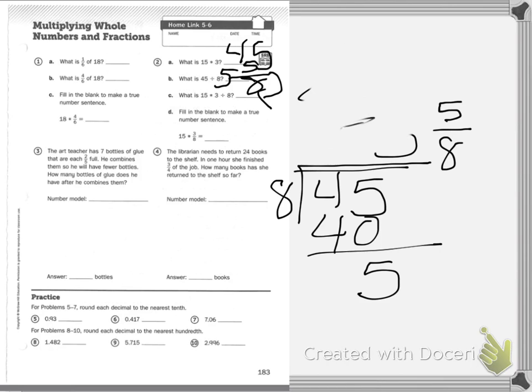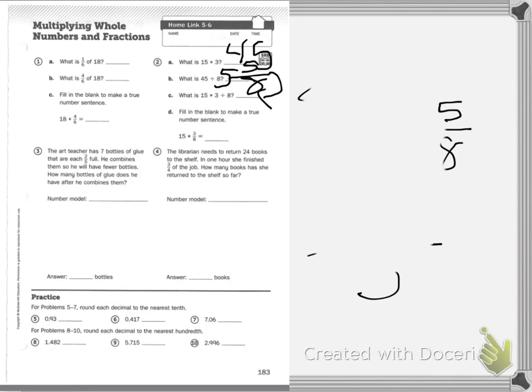Then it says, fill in the blank to make a number sentence true. So what is 15 times 3/8? So 15 times 3/8 is what we have found. 5 and 5/8.